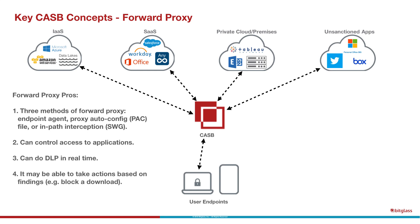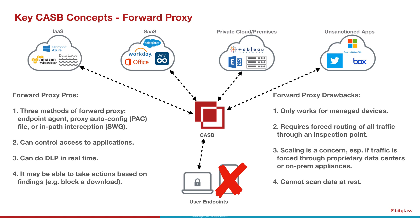Forward proxy does involve some changes to user behavior. Another potential drawback is that it only works for managed devices — you need to have that PAC file installed, that agent installed, or route traffic through the secure web gateway. Scaling can also be a concern, particularly if traffic is forced through on-premises appliances or proprietary data centers. Forward proxy also cannot scan data at rest. A big advantage, however, is that it can address unsanctioned applications as well, opening up the possibility of securing data to and from unsanctioned apps — though only for managed devices.